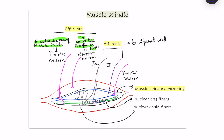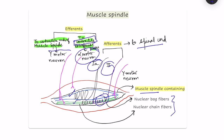The muscle spindle contains nuclear bag and nuclear chain fibers. 1A fibers supply both types; type 2 fibers supply only the static component, and these go to the spinal cord. The alpha motor neuron supplies the extrafusal contractile fibers, and the gamma motor neuron supplies the ends of the muscle spindle. These muscle spindle ends are actually contractile. These two — alpha and gamma — are the efferents.